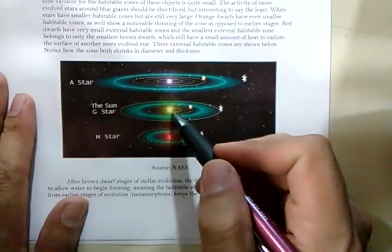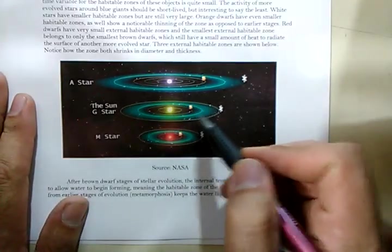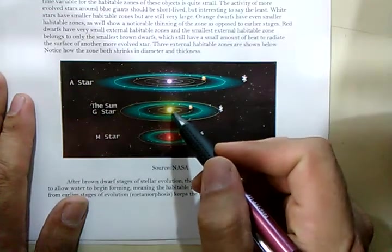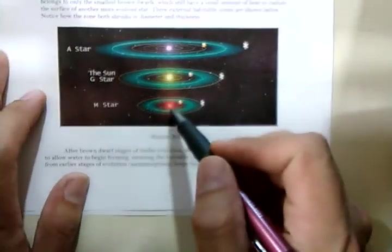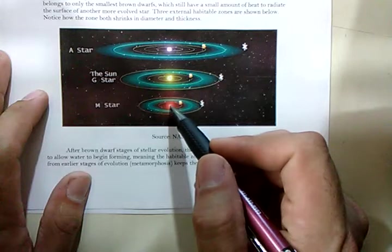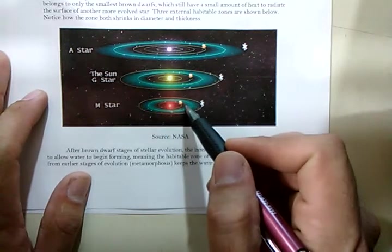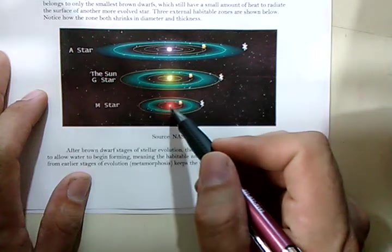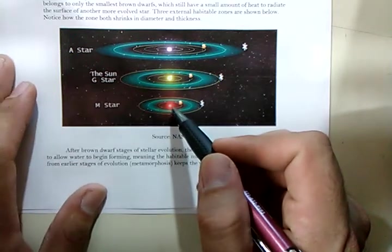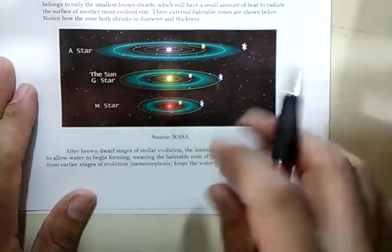As the star cools and shrinks, the habitable zone narrows and moves further into the host. And as it reaches M-Star stage, which is basically red dwarfs, it narrows even more and it moves further inwards towards the host.